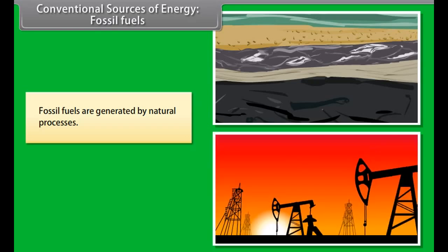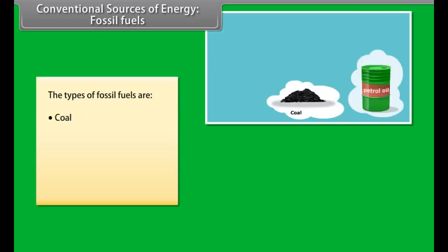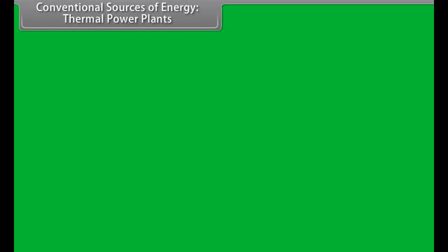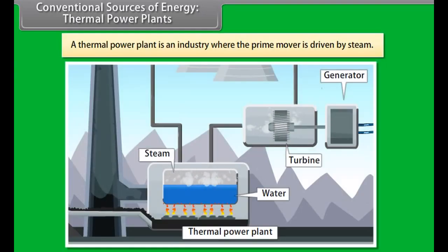Fossil fuels are generated by natural processes. They include a high percentage of carbon. These are non-renewable sources of energy as they take millions of years to form. The reserves of these fuels are reducing at an alarming rate. The types of fossil fuels are coal, petroleum, natural gas, and heavy crude oil.